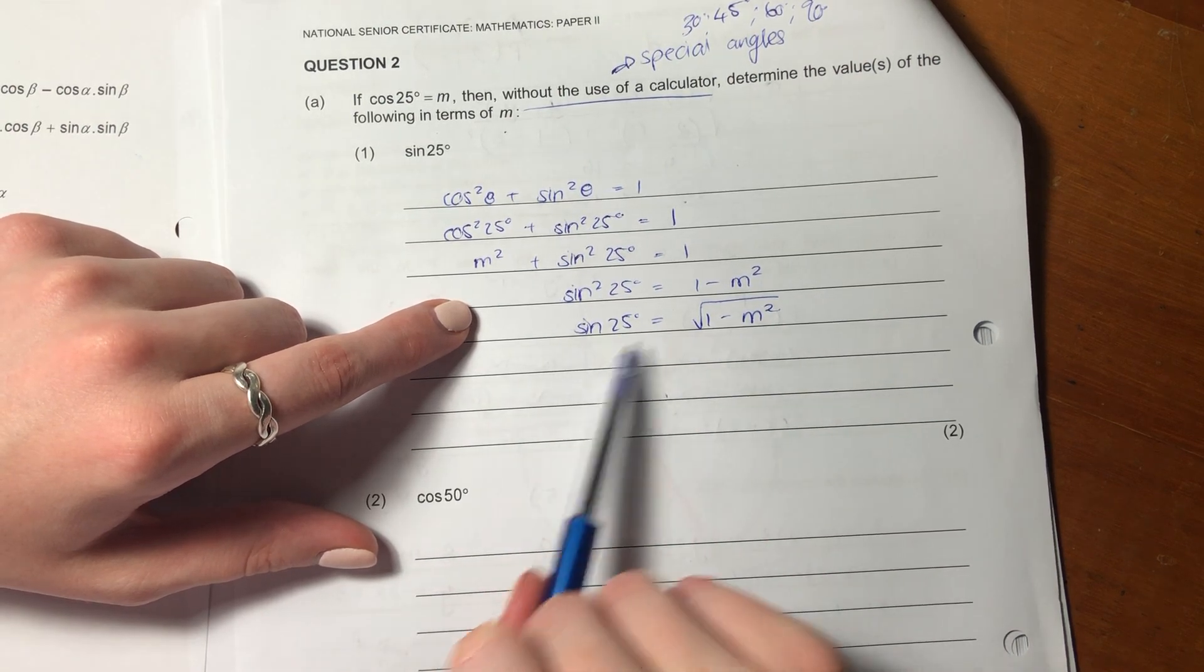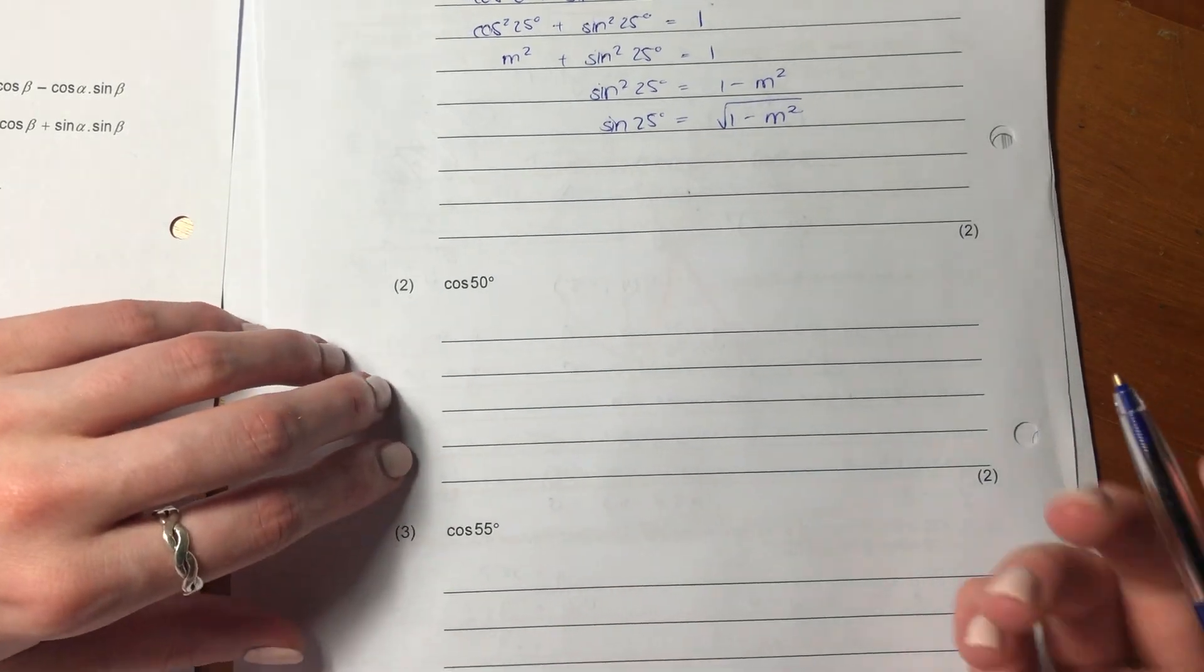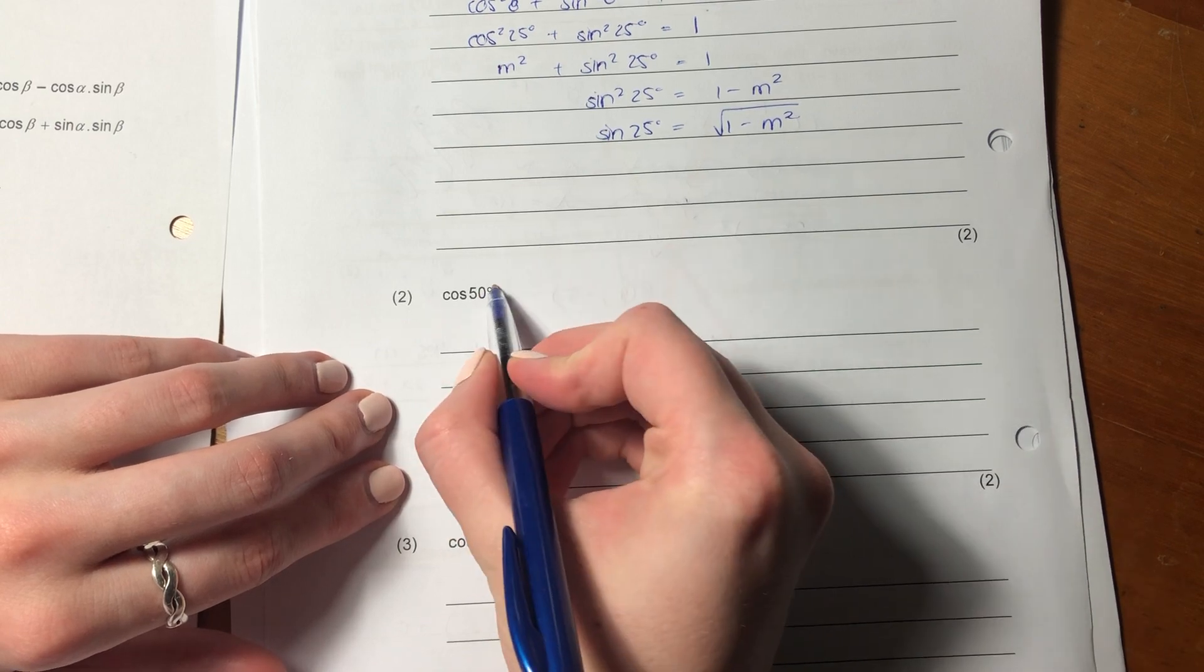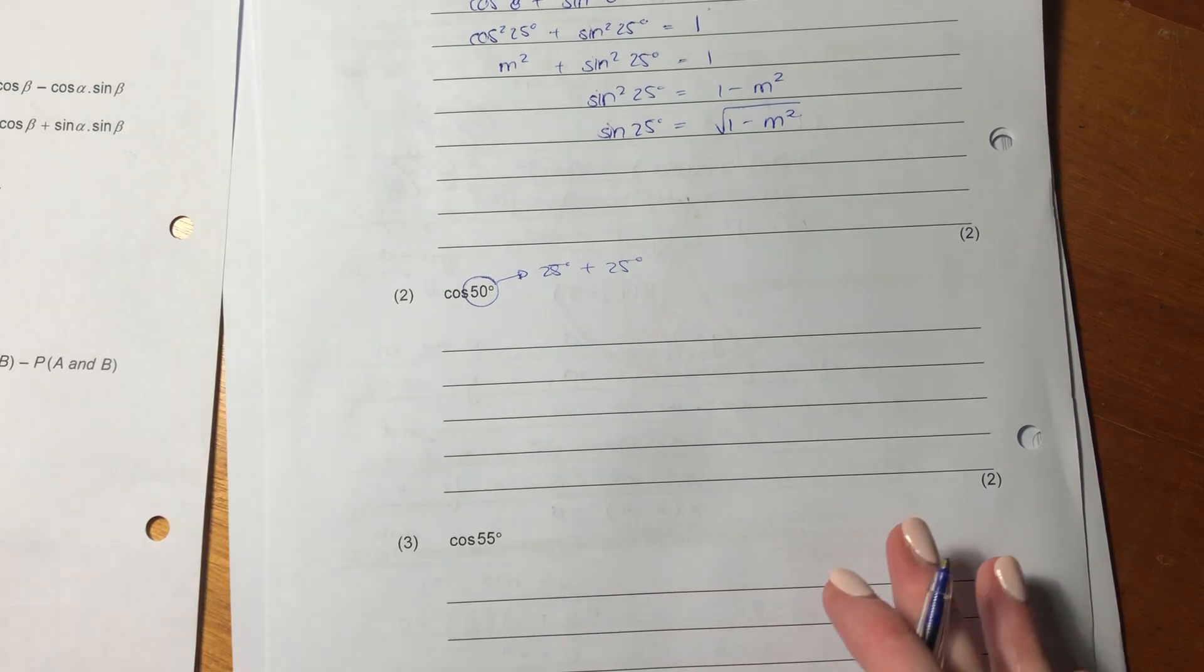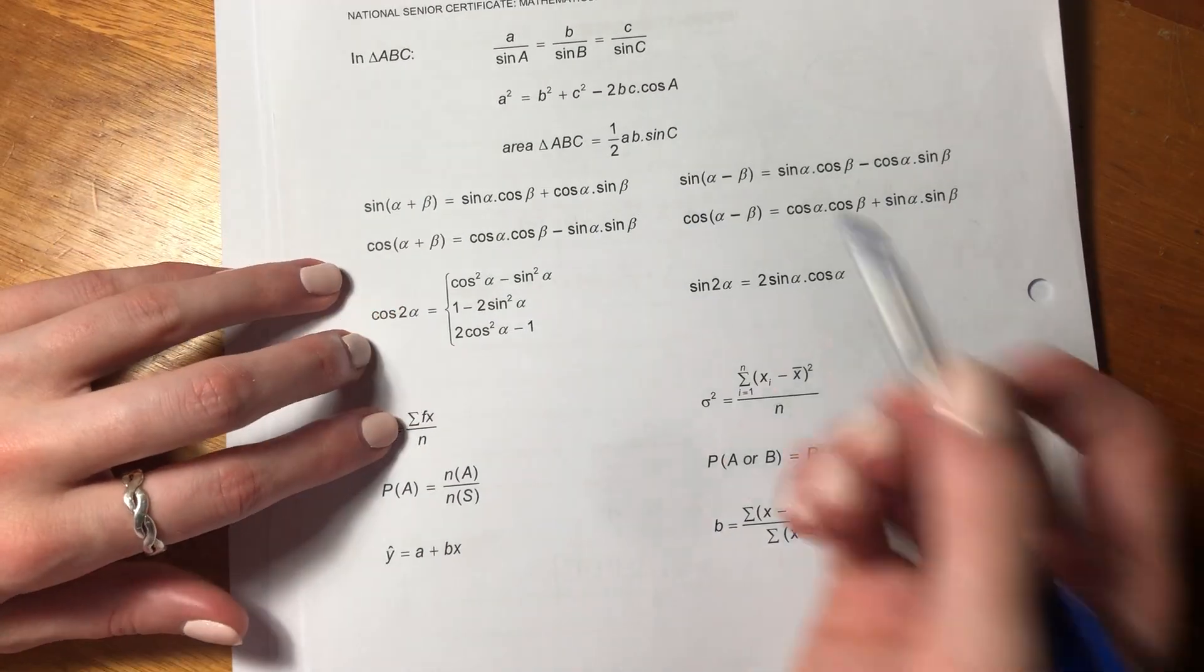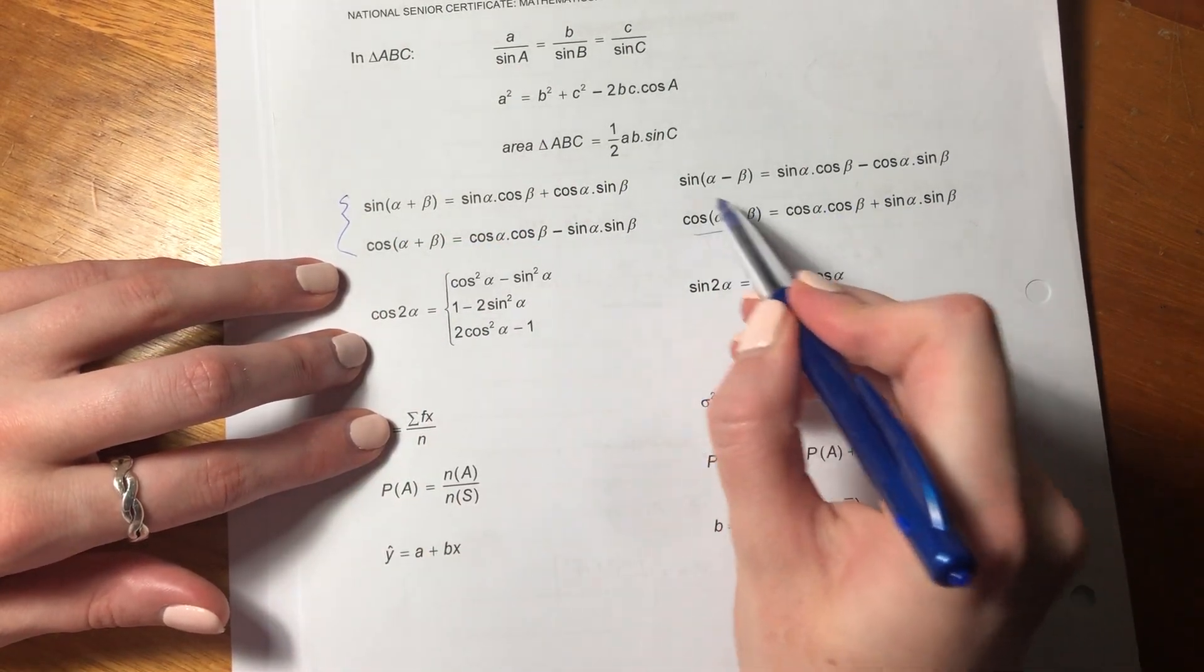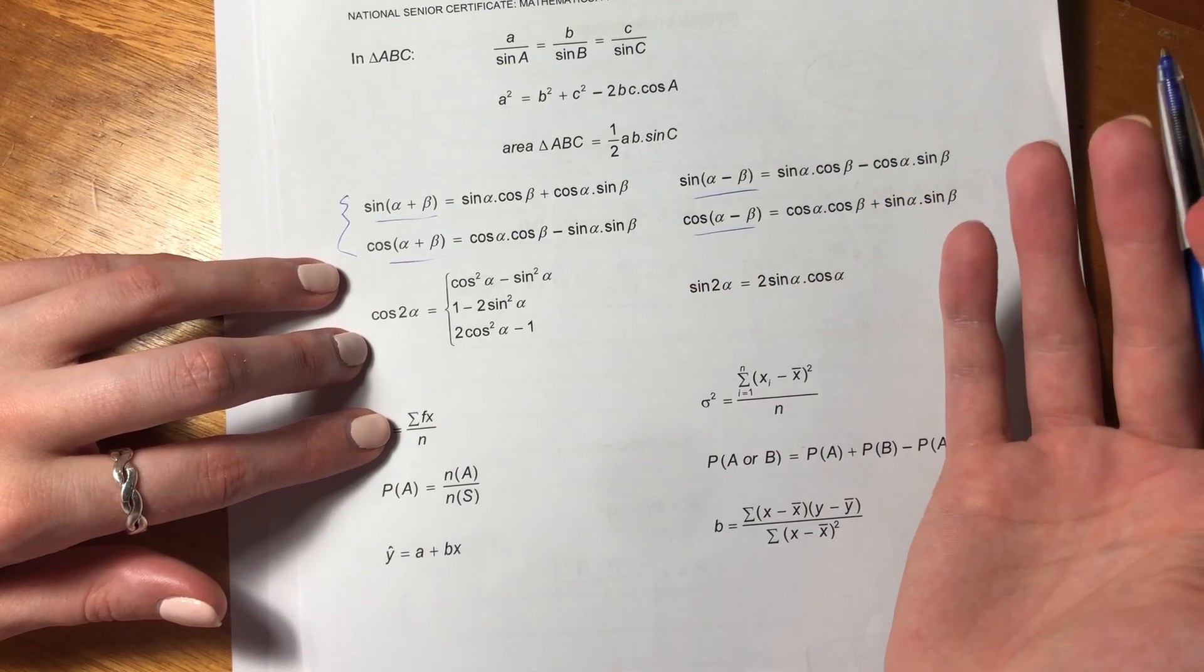So now let's go to the next one. So this is cos50. You should be thinking, well that's 25 plus 25, so I can split it and I could probably get something in terms of m. So if we go to these here, it's very important to remember all of these different manipulations of these trig identities because they're really useful when we do these questions. Let's maybe use this one here where it's cos alpha plus beta, but in this case both alpha and beta are 25.